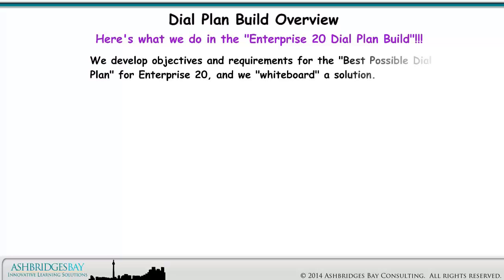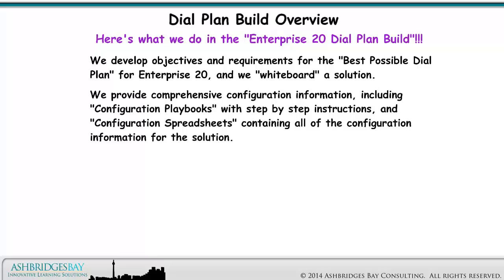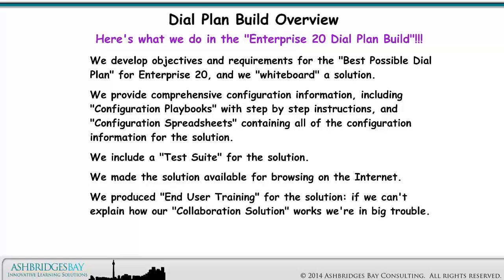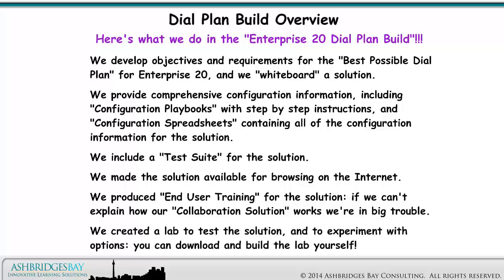We develop objectives and requirements for the best possible dial plan for Enterprise 20, and we whiteboard a solution. We provide comprehensive configuration information, including configuration playbooks with step-by-step instructions, and configuration spreadsheets containing all of the configuration information for the solution. We include a test suite for the solution. We made the solution available for browsing on the internet. We produced end-user training for the solution. If we can't explain how our collaboration solution works, we're in big trouble. We created a lab to test the solution, and to experiment with options — you can download and build the lab yourself.